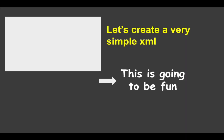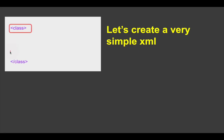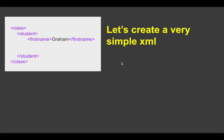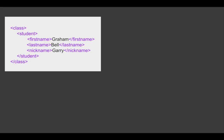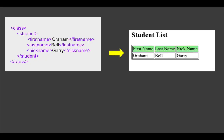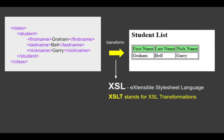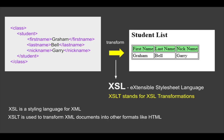Let's get started. I have created a simple XML with two tags: class — start and end tag — and inside class, a student start and end tag. Inside student we have first name, last name, and nickname. If I open this XML in any editor or browser it looks as-is. If I want styling, formatting, and designing, I need to do some transformation, and for this we use XSL. XSL stands for Extensible Stylesheet Language, and XSLT stands for XSL Transformations. In simple words, XSL is a styling language for XML, and XSLT is used to transform an XML document into other formats like HTML.